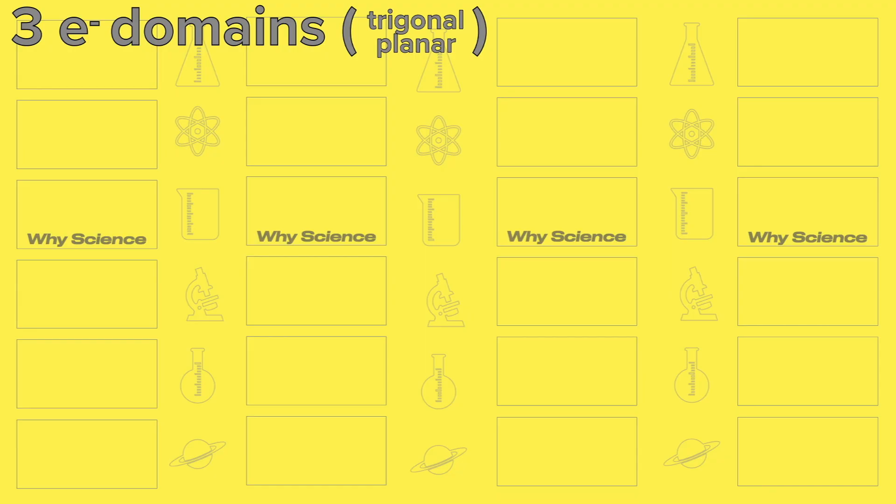Molecules with three electron domains can form trigonal planar or bent. Let's start with trigonal planar. It will happen when the three electron domains are all bonds and there is no lone pair.